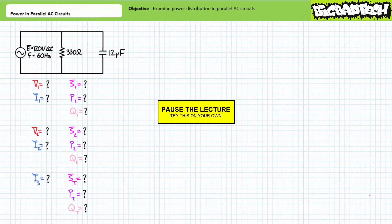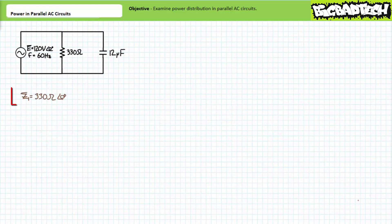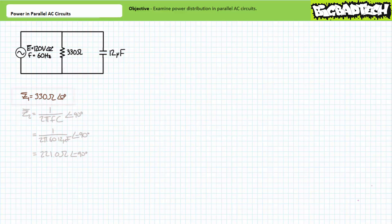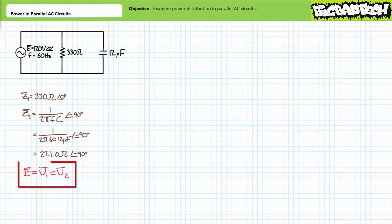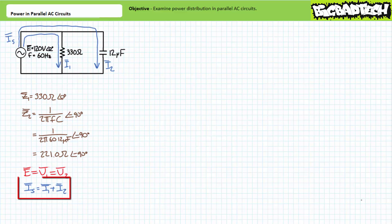If you're tracking, you should have obtained the following results. The complex impedance of the 330 ohm resistor is 330 ohms at an angle of zero degrees — let's call this impedance Z1. The complex impedance of the 12 microfarad capacitor at 60 hertz is roughly 221 ohms at an angle of negative 90 degrees — let's call this impedance Z2. Voltage across elements in parallel is the same; this is the most fundamental property of parallel circuits. Supply voltage equals V1, which equals V2. A Kirchhoff's current law analysis suggests that source current equals I1 plus I2.